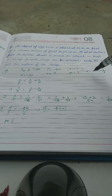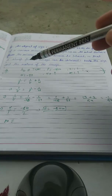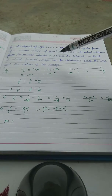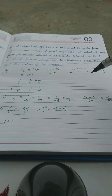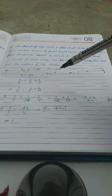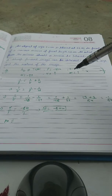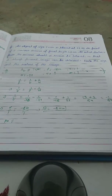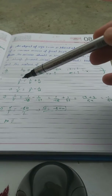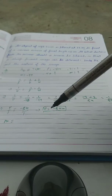Since it is a concave mirror, f is minus 18 centimeter. We have to find at what distance from the mirror a screen should be placed to get the image, so we need to find v. We also need to find the size and nature of the image. Using the mirror formula: 1/f = 1/v + 1/u, putting all the values, we get v.